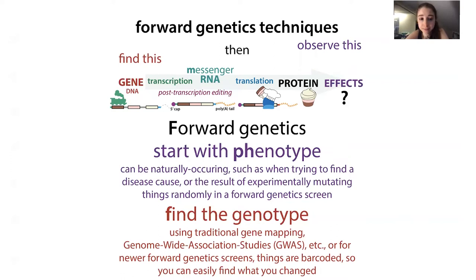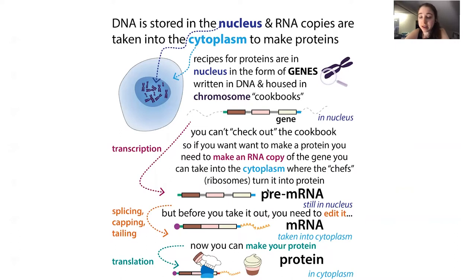The idea is still the same — you're observing something and looking to see what caused it. We need to step back and think about what is actually causing these things. What we're typically looking at are changes in the DNA that lead to changes in the proteins that are made. Sometimes the changes are in the protein itself, sometimes in what proteins are expressed, sometimes in genetic regions that aren't actually making proteins — maybe they're making regulatory proteins or functional RNAs like microRNAs.